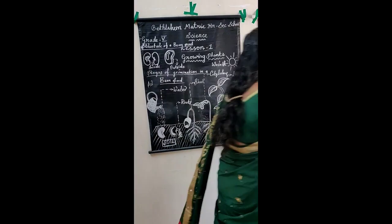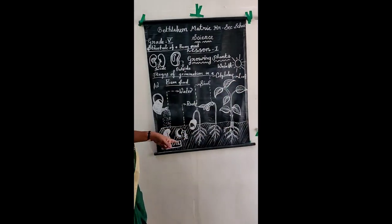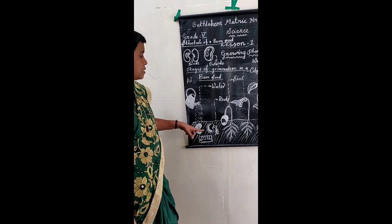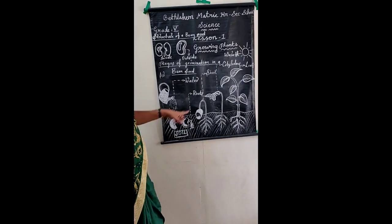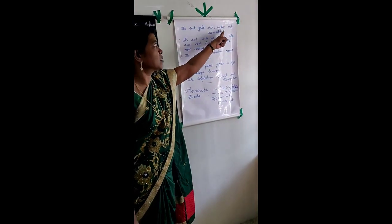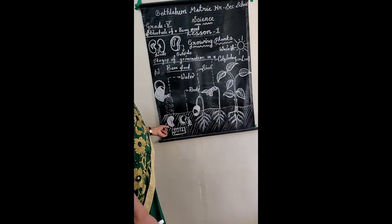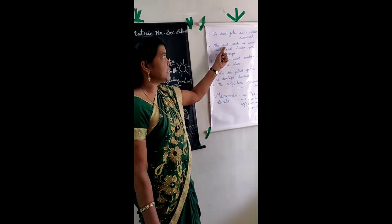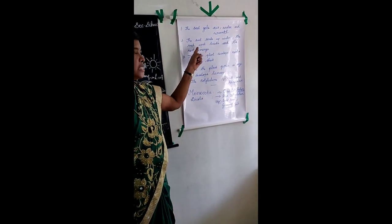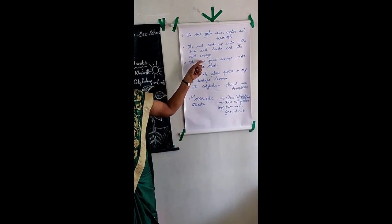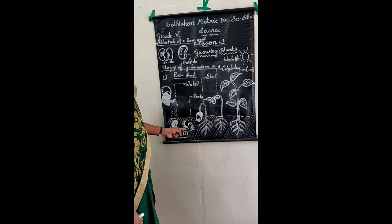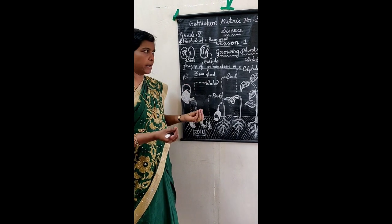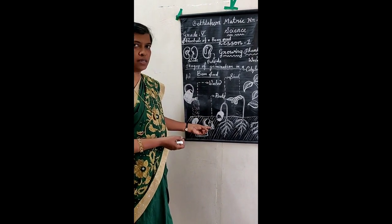These are the five stages of germination in a bean seed. How many stages are there for the seed to germinate? Five stages. First, the seed gets air, water, and warmth. Second, the seed soaks up water, the seed coat breaks, and the root emerges.